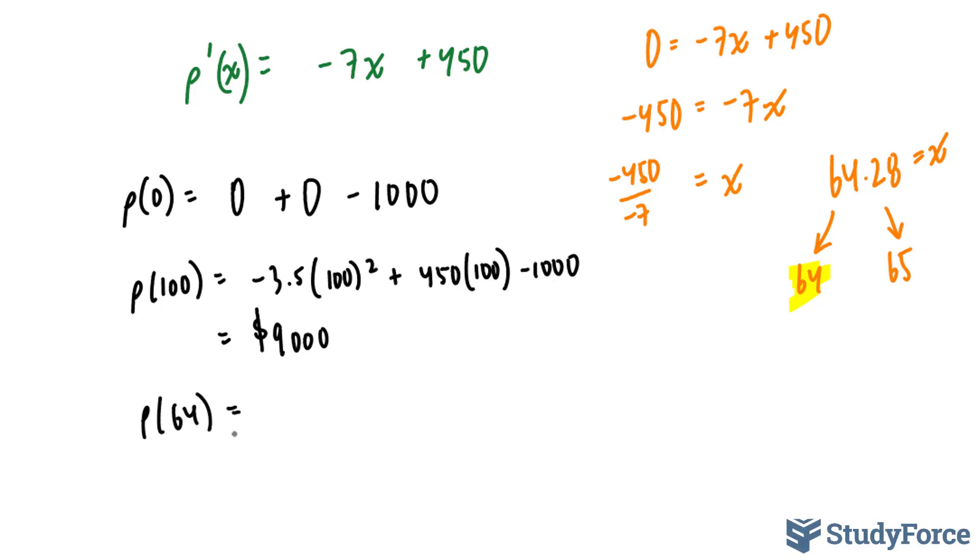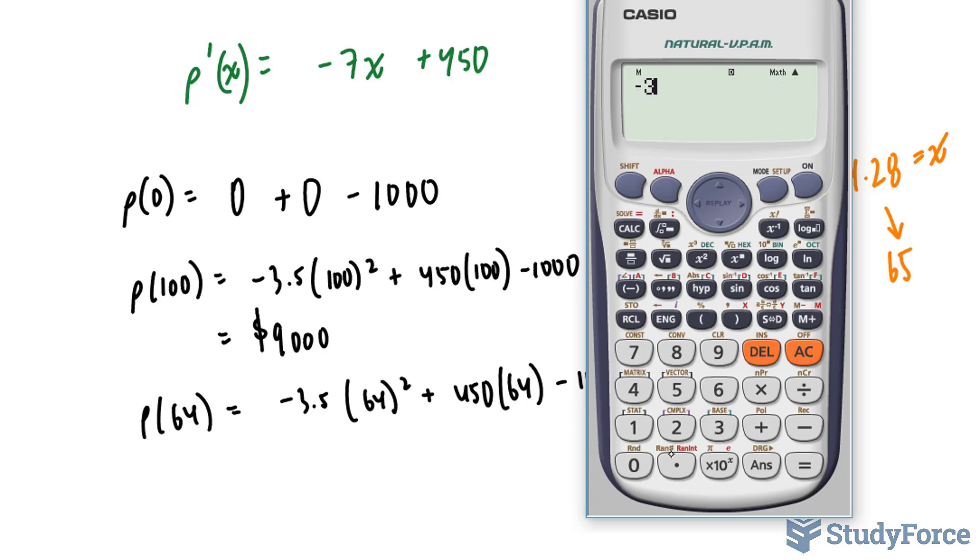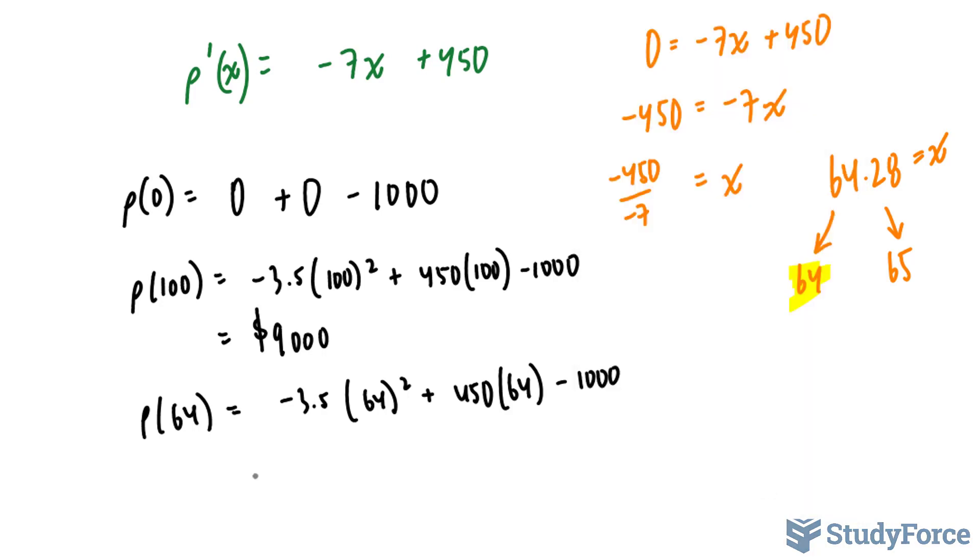p at 64, -3.5 times 64 squared plus 450 times 64 minus 1,000. -3.5 times 64 to the power of 2, plus 450 times 64 minus 1,000. And this gives us 13,464.